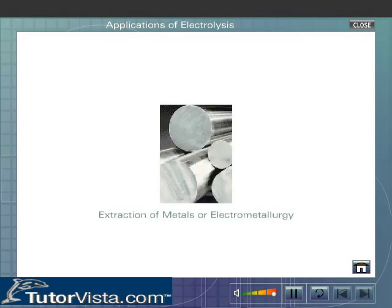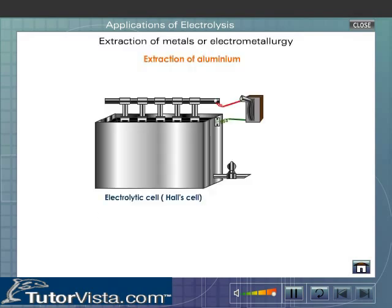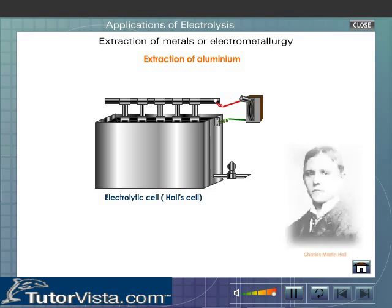The extraction of metals, or electrometallurgy. The external view of the electrolytic cell used for the reduction of pure alumina is shown here. The cell is called Hall's cell, after the US chemist Charles Martin Hall, who invented the process.